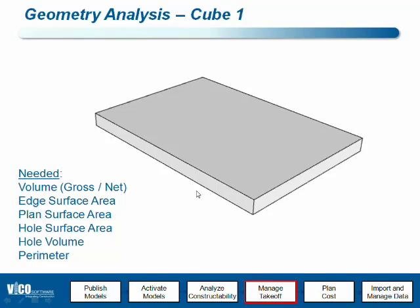So this is a cube which looks a lot like a slab. There will be an attribute that says this should behave as a slab in the VicoOffice environment. Based on that characteristic, a collection of algorithms will be executed that treat the collection of polygons in a certain way. So behavior of geometry in VicoOffice is defined as the set of quantity extraction algorithms that is executed.